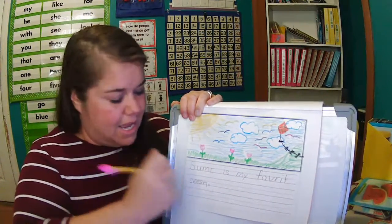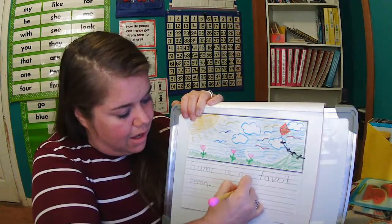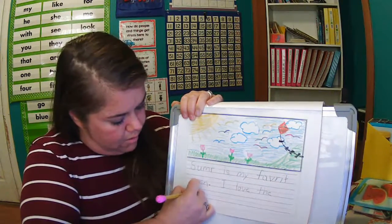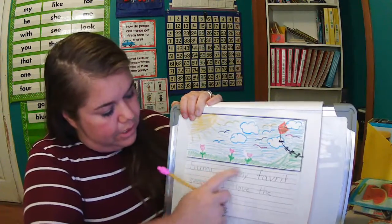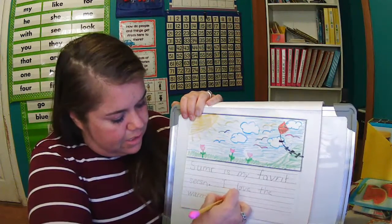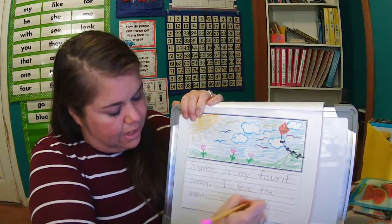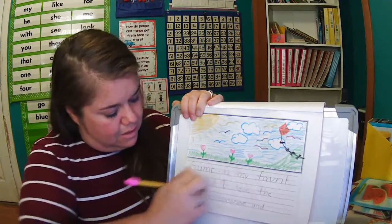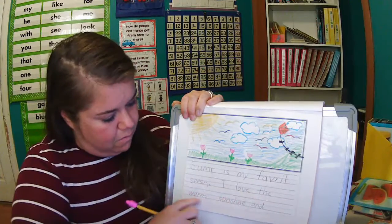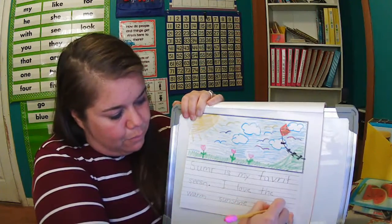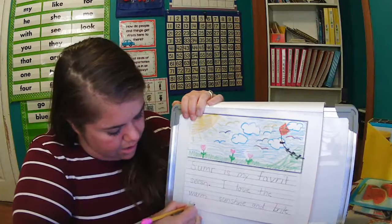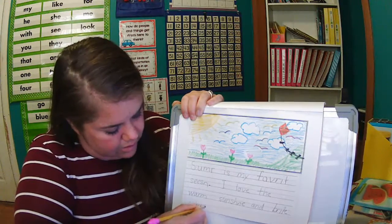That's one telling sentence. I love the warm... Warm... Summer is my favorite season. I love the warm sunshine and bright colors because summer always has lots of bright colors. Summer is my favorite season. Summer is my favorite season. I love the warm sunshine and bright colors. I'm out of room, so I'm going to come down to the bottom. Colors. Colors. Period.